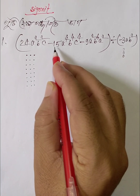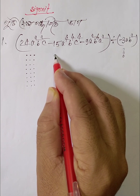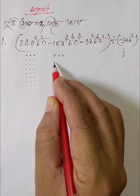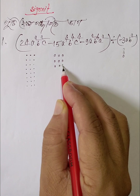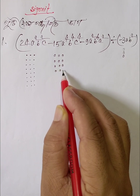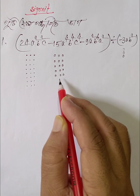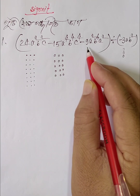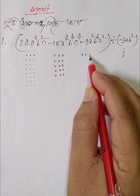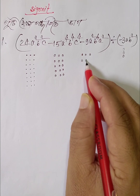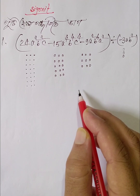The next term is negative 15, so we will take fifteen antidots like this: 3, 6, 9, 12, 15. The next term is negative 9, so we will take nine antidots like this.